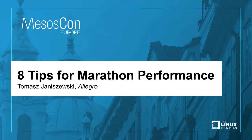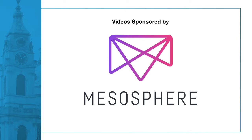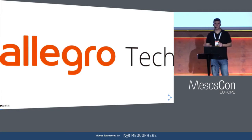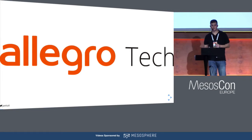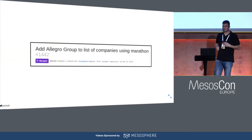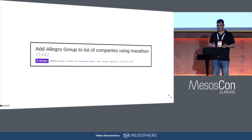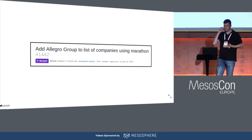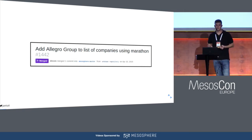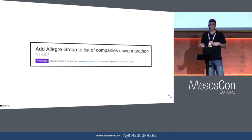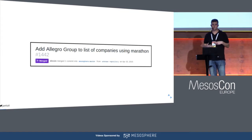Hi, my name is Tomek and today I will talk about tips for marathon performance. I'm working at Allegro, which is one of the biggest e-commerce solutions in Central Europe, located in Poland. We started using Marathon in fall 2013-14, and this is my first pull request to Marathon when we started using it with production load. Over a couple of years, we've got some insights on performance issues and I want to share them with you.